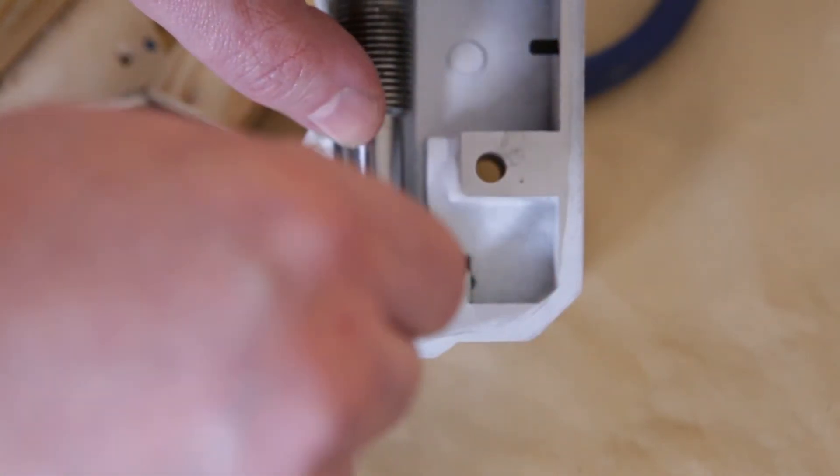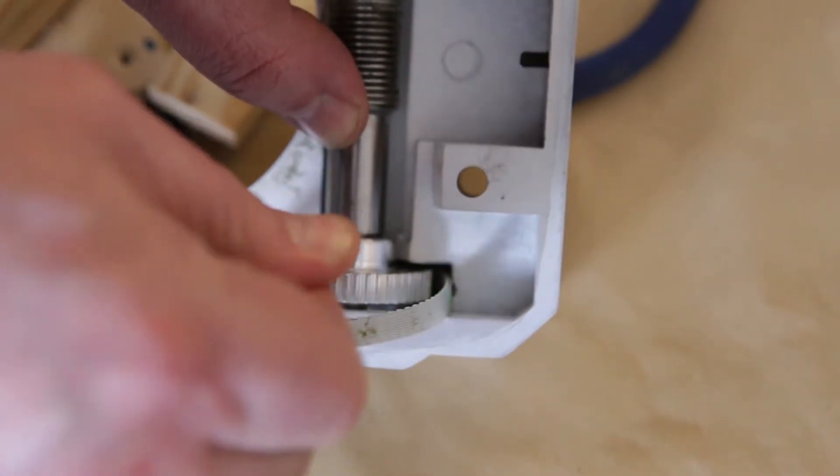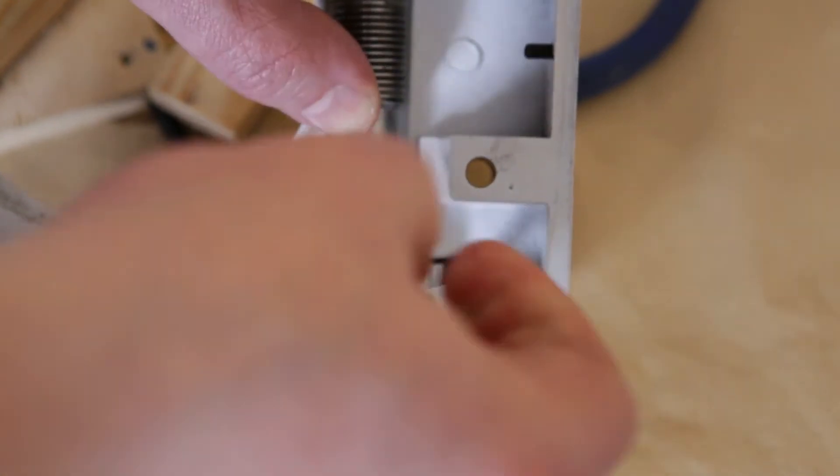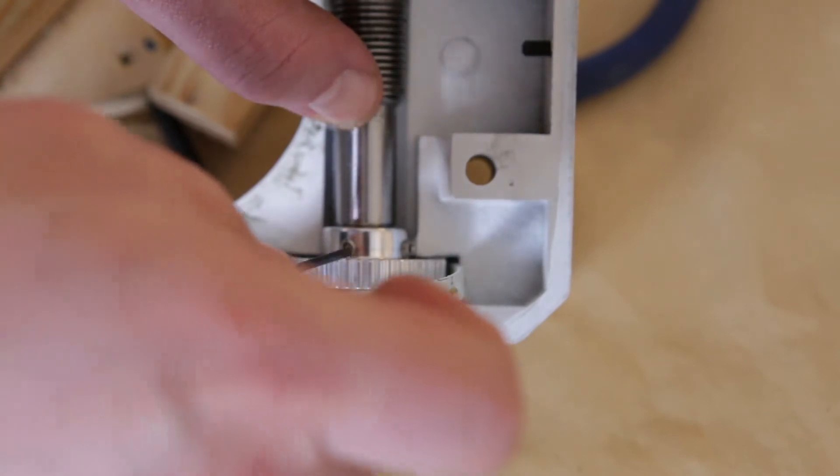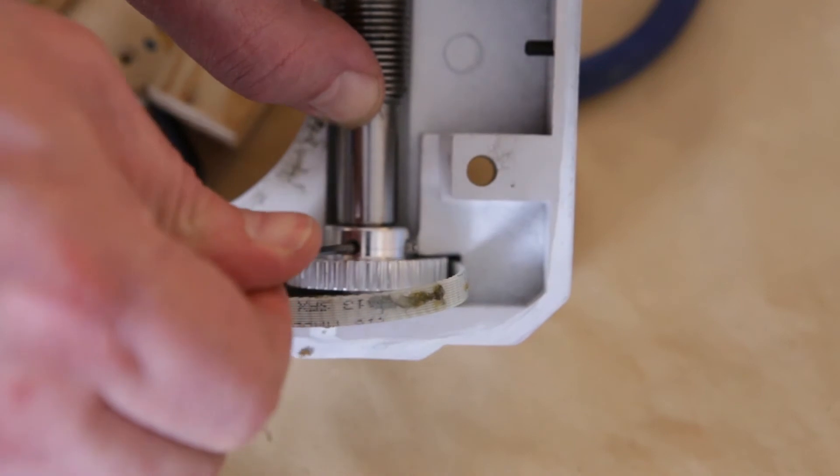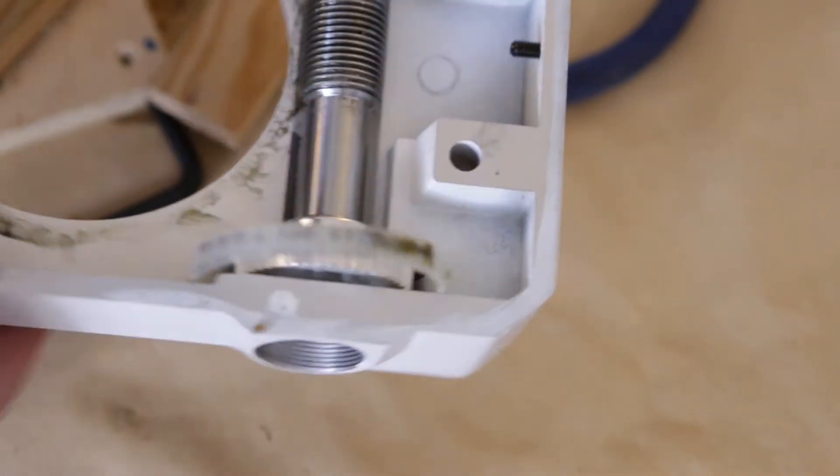So all we need to do is tighten up these grub screws. They don't need to be super tight, so don't overdo them because this is aluminum, it's really easy to strip the threads. Just tighten them up like that and that should be it. The only thing left to do is to put the bearing back in there and then close the caps.